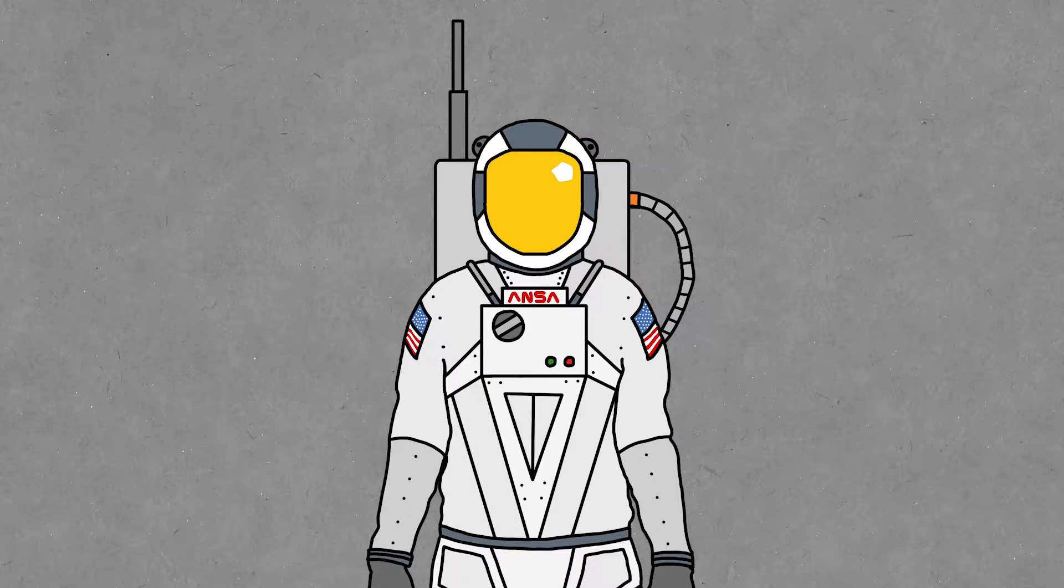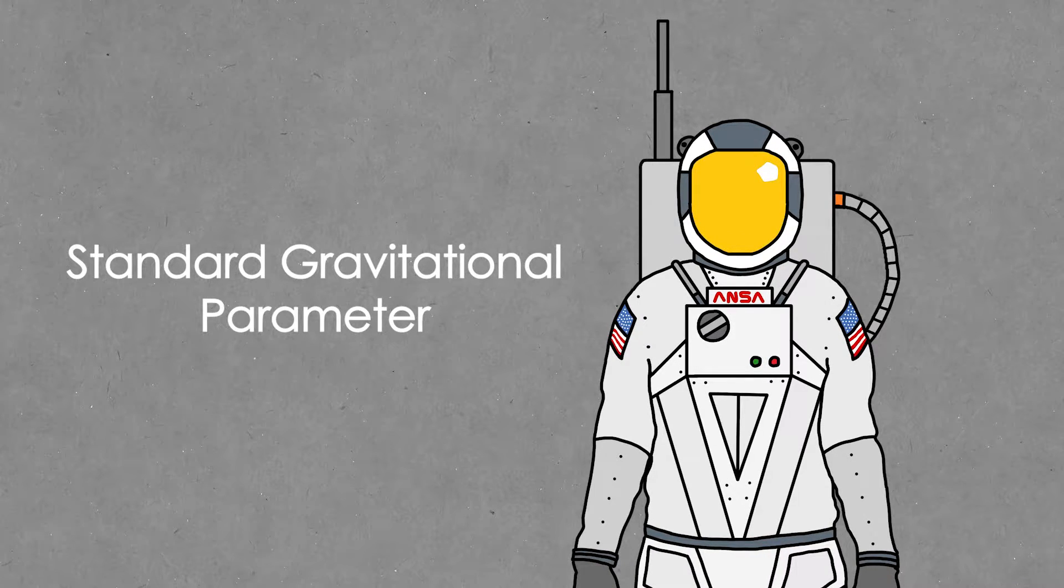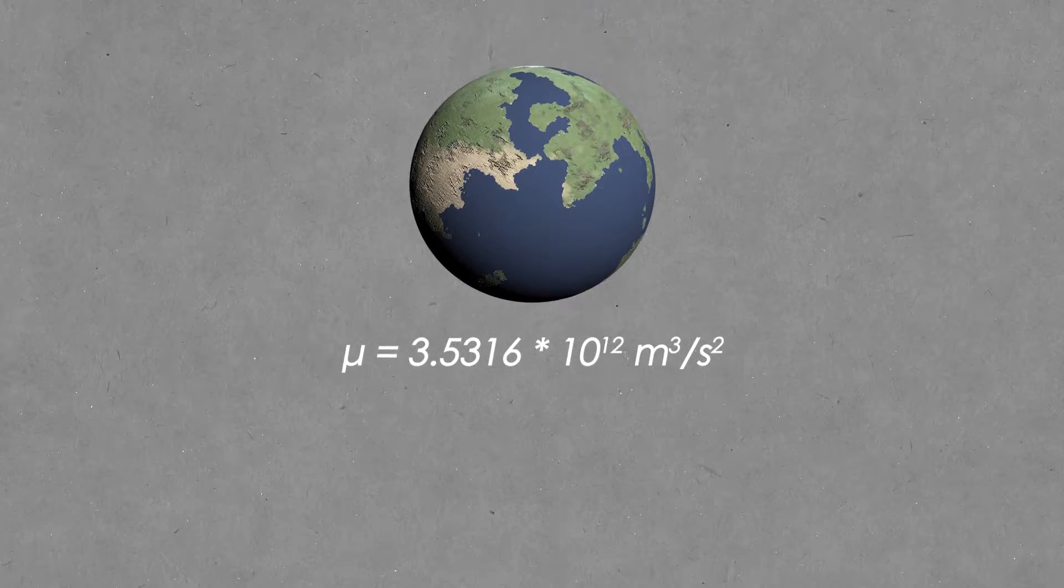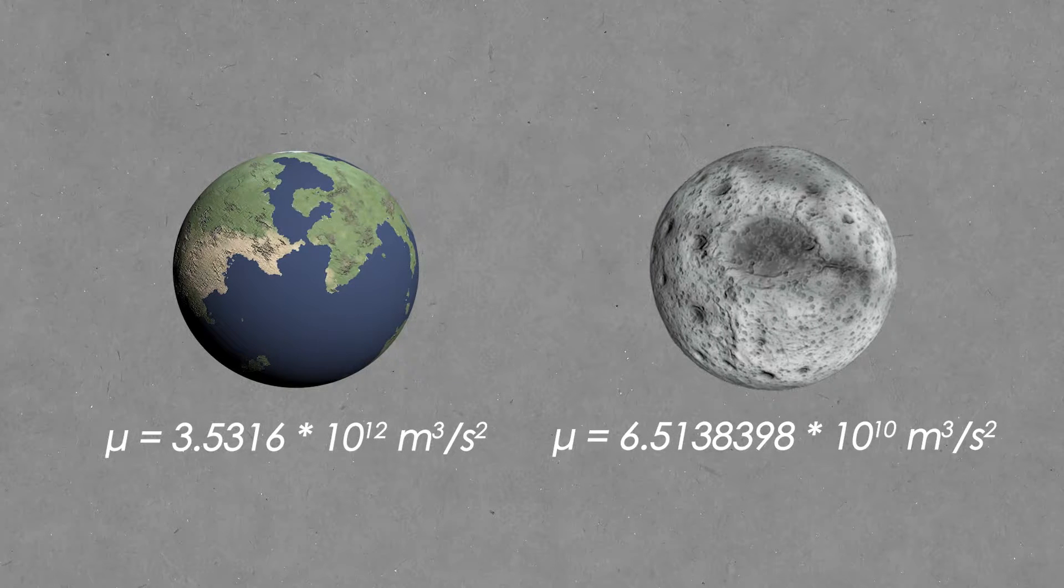And the last thing we need to understand is the gravity of Kerbin and the Mun, which are summed up in something called the standard gravitational parameter. This is the mass of the body multiplied by the universal gravitational constant. For Kerbin, it's 3.5316 times 10 to the power of 12 meters cubed per second squared, and for the Mun, it's 6.5138398 times 10 to the power of 10 meters cubed per second squared. It's a weird unit.